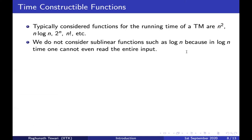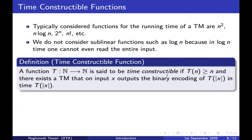If a Turing machine only looks at part of its input, it cannot even distinguish between two different strings beyond log n many cells. You can define a Turing machine that just accepts or just rejects, but that is a trivial operation — we do not want to allow such things.